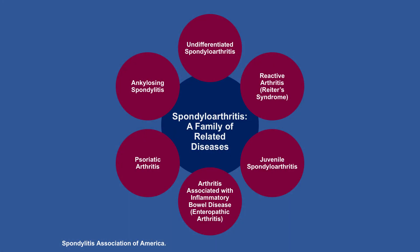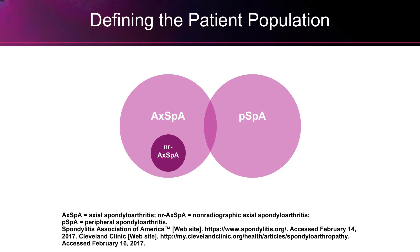My focus today is going to be on the spondyloarthropathies. This is a family of related diseases, and I'm going to focus on AS and PsA. We now see peripheral and axial forms, as well as the up-and-coming non-radiographic form — patients who have inflammatory back pain but don't yet meet all the criteria. The question is whether we could start these new therapies early and prevent progression, or whether we're just here to treat symptoms.